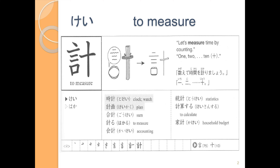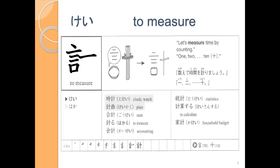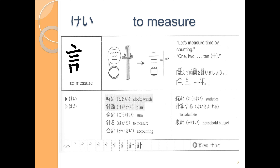Let's write 計 together. Starting with stroke 1, 2, 3, 4, 5, 6, 7. And then once more: 1, 2, 3, 4, 5, 6, 7. One more time.